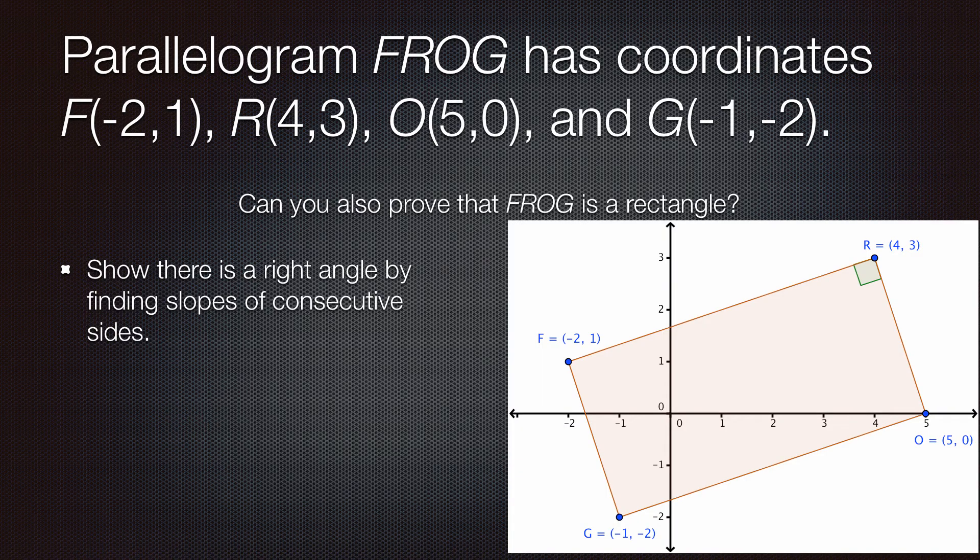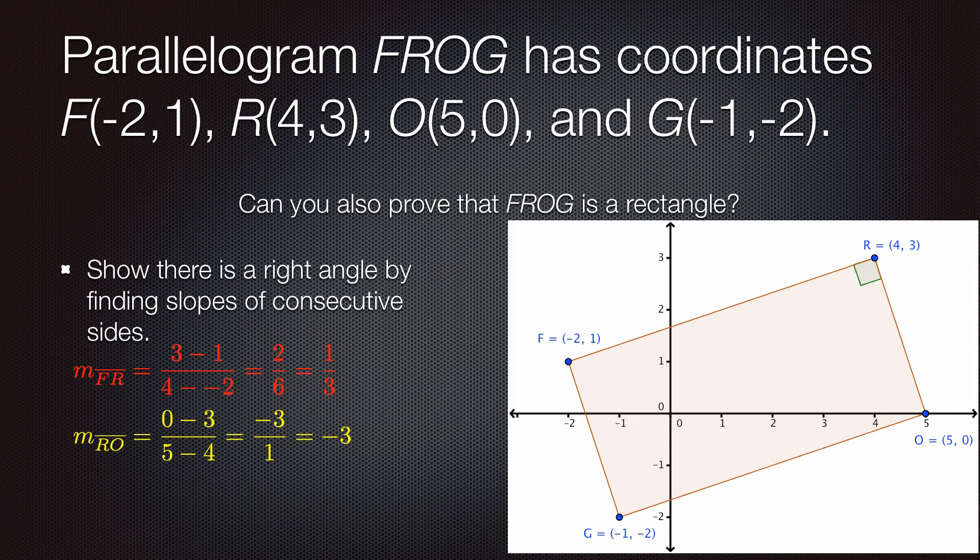One way is to show that there is a right angle by finding the slopes of two consecutive sides. So, for example, if we were to graph out FROG, maybe I would find the slope of FR. So, I see that slope is 1 third. The slope of another consecutive side, let's say RO, that slope is negative 3. Now, 1 third and negative 3 are opposite reciprocals. And so, that guarantees that FR is perpendicular to RO. And, if we have one right angle, then we have four right angles. So, therefore, FROG is a rectangle.